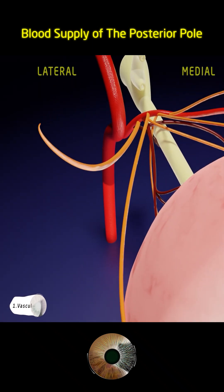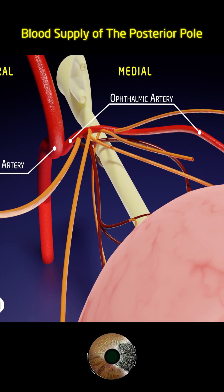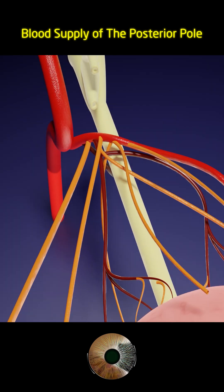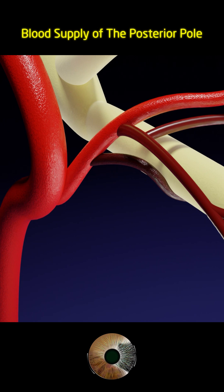The ophthalmic artery is derived from the internal carotid artery. It gives rise to several branches that divide into two main groups: the orbital branches, colored orange here, which supply the structures of the orbit, the eyelids, and the lacrimal gland; and the ocular branches, colored dark red here, which supply the eyeball itself. What is important now are the ocular branches of the ophthalmic artery.